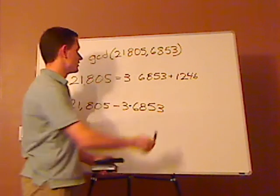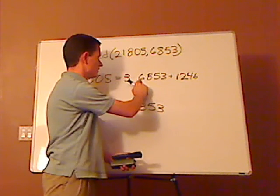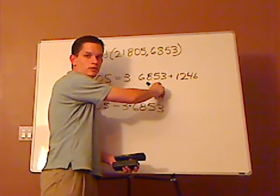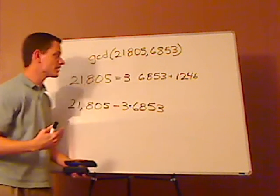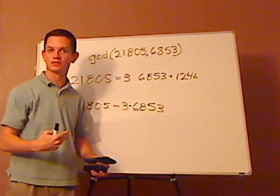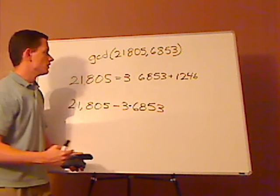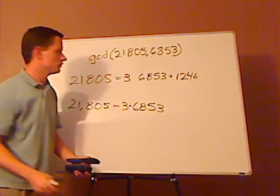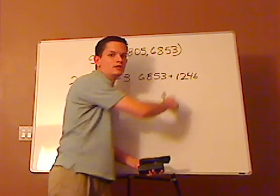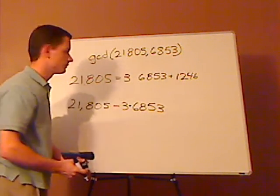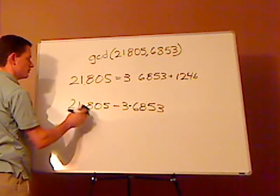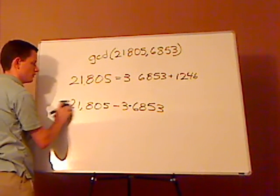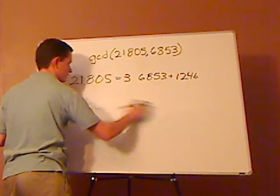That works, because if it was something more, then you can take another 6,853 out. If it was negative, you took too much out, because you always want this remainder to be a positive number. And that's key when doing this algorithm. So you're going to do this every single time.